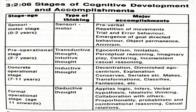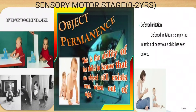Object permanence is the ability of the child to know that an object still exists even when it is out of sight. For example, if a child is playing with a doll and you hide it behind a screen, the child does not know it is still there — it forgets and goes to play with another object. But as the child matures, they begin searching for the hidden object. Children also begin to imitate the behavior of adults they come across.